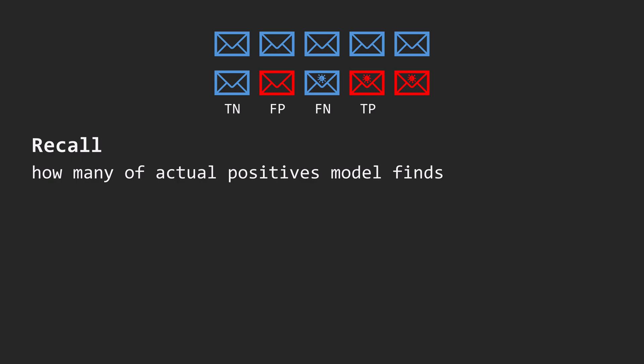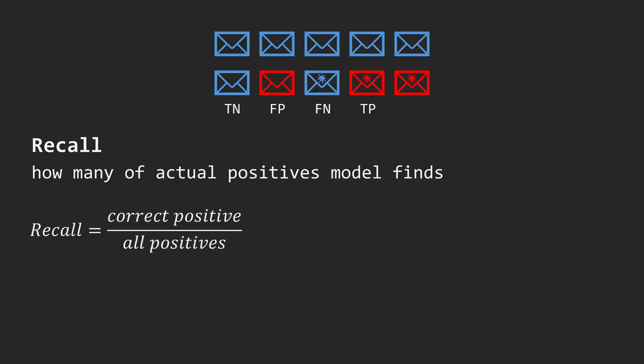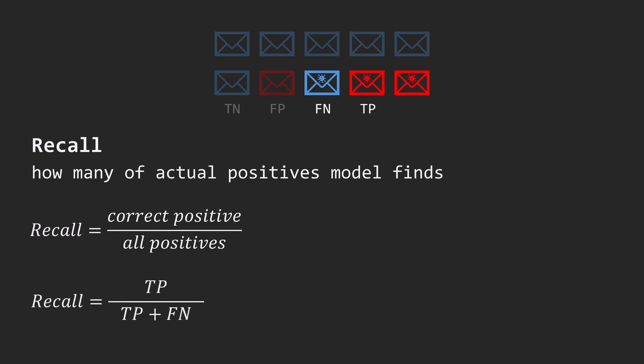In our case, how many spam emails it correctly detects. Here we focus only on positive class elements. Recall is calculated as true positives divided by all actual spam emails. In our case, the model identifies 2 out of 3 spam emails, giving a recall of 67%.